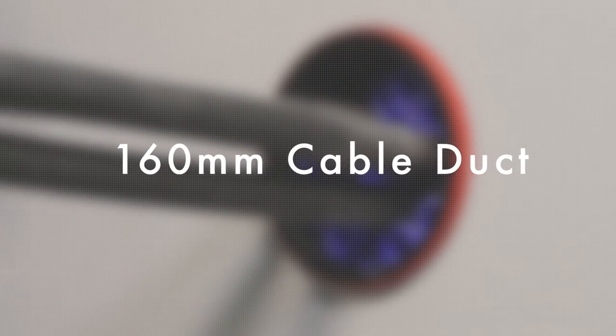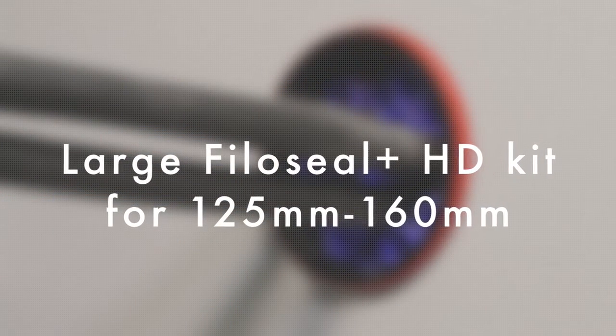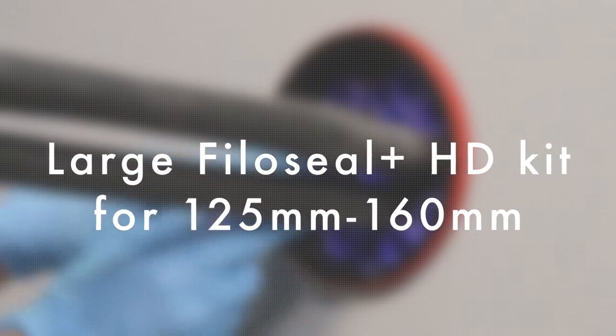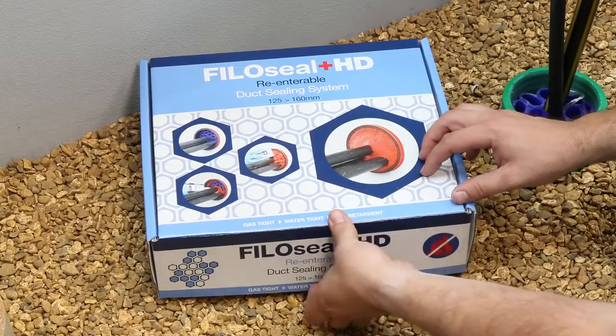Now we're going to seal a 160mm cable duct using the large PhiloSeal Plus HD kit that accommodates duct sizes from 125 to 160mm. Other sizes are also available.